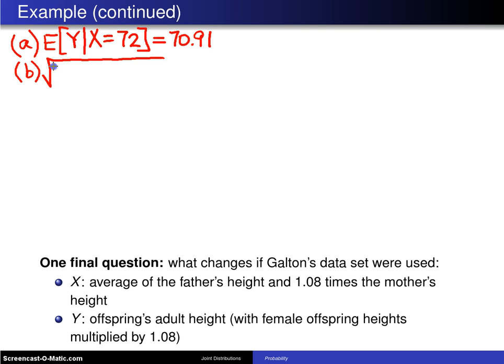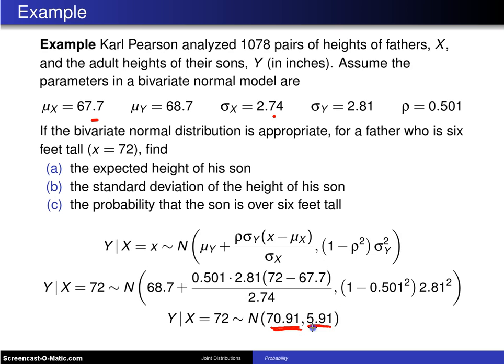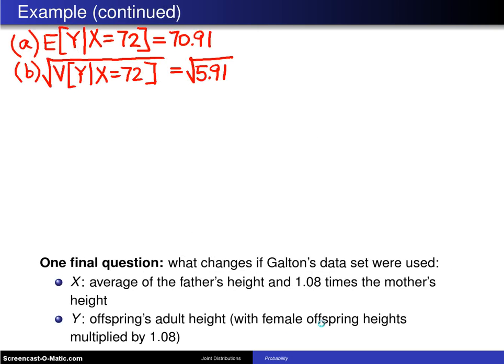The standard deviation of the height of the son is the same as saying we want, for part B, the square root of the variance of Y, given X equals 72. And you know that that will be nothing more than the square root of 5.91. And that 5.91 came from right here. Square root of the variance is the standard deviation. When you calculate the square root of 5.91, at least to three decimals, you get 2.43.